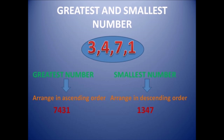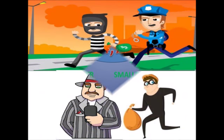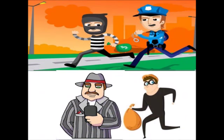So to form the greatest number using given digits, we arrange them in descending order, and for the smallest number we arrange them in ascending order.